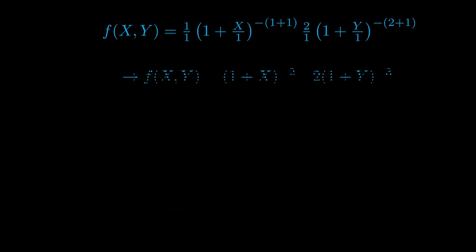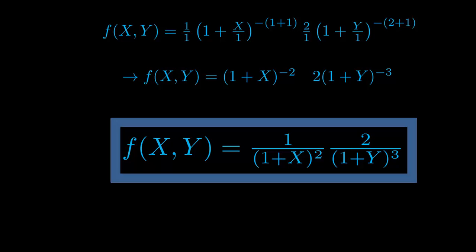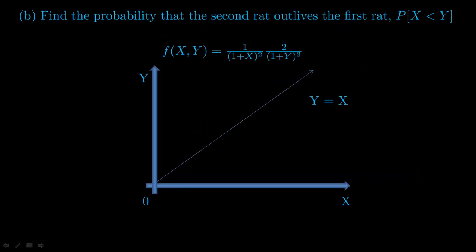Once you're done simplifying f of x and y, your final joint probability density function should be 1 over (1 plus x) squared times 2 over (2 plus y) cubed. Now that you've figured out your joint pdf, we can find the probability that the second rat outlives the first rat, which means you're looking at all the y values greater than x.